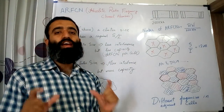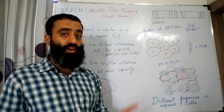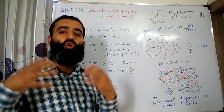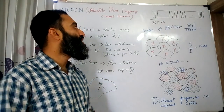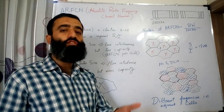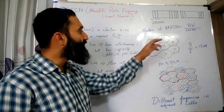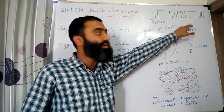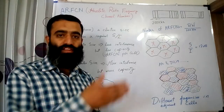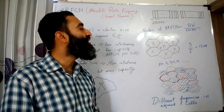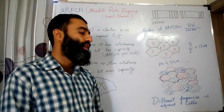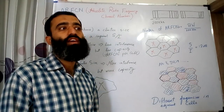The more ARFCNs an operator has, the more mobile users it can accommodate. For example, if an operator has a frequency band of 5 MHz in the uplink and downlink, we divide this bandwidth of 5 MHz by 200 kHz and we get 25 ARFCNs. This means that this particular operator has 25 ARFCNs to accommodate users.